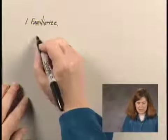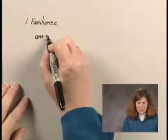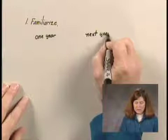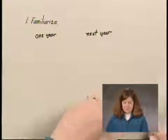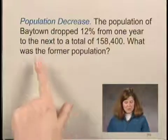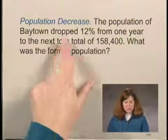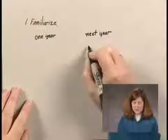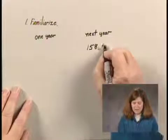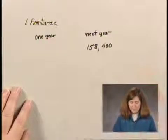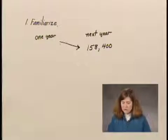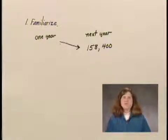The population one year to the next year dropped. Now, which population are we given? Well, we're given the second year's population. It dropped 12% from one year to the next, to a total of 158,400. So the second year's population would be 158,400. Now, we know it dropped, so it went down 12%. But 12% of what?